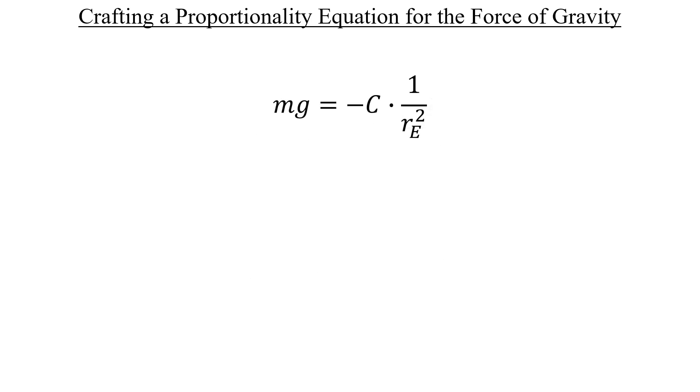at the surface, the gravitational force from the Earth on some object is just mg, right? So that belongs here on the left. If we relate what that's saying to the rest of this equation that we're trying to create, well, that means that the r in the denominator on the right should be the radius of the Earth in order to make this true.